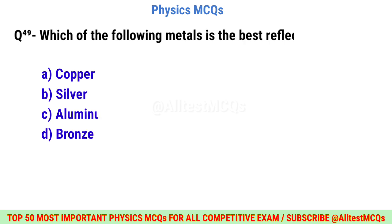Question number forty-nine: Which of the following metals is the best reflector of light? Correct option is B: Silver.